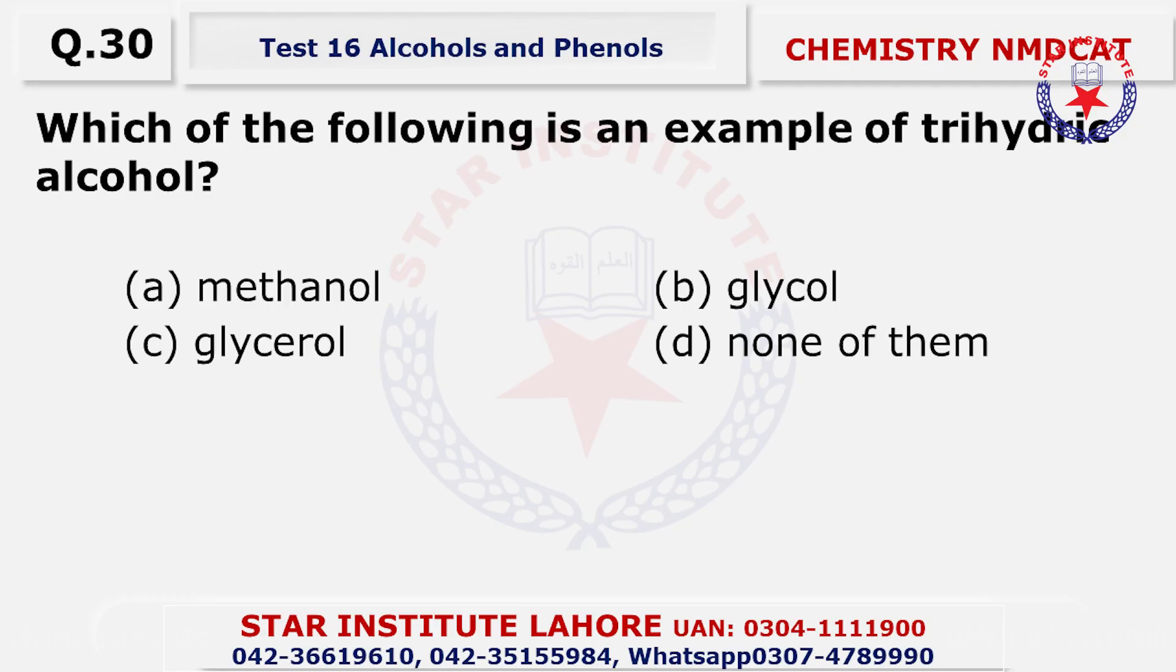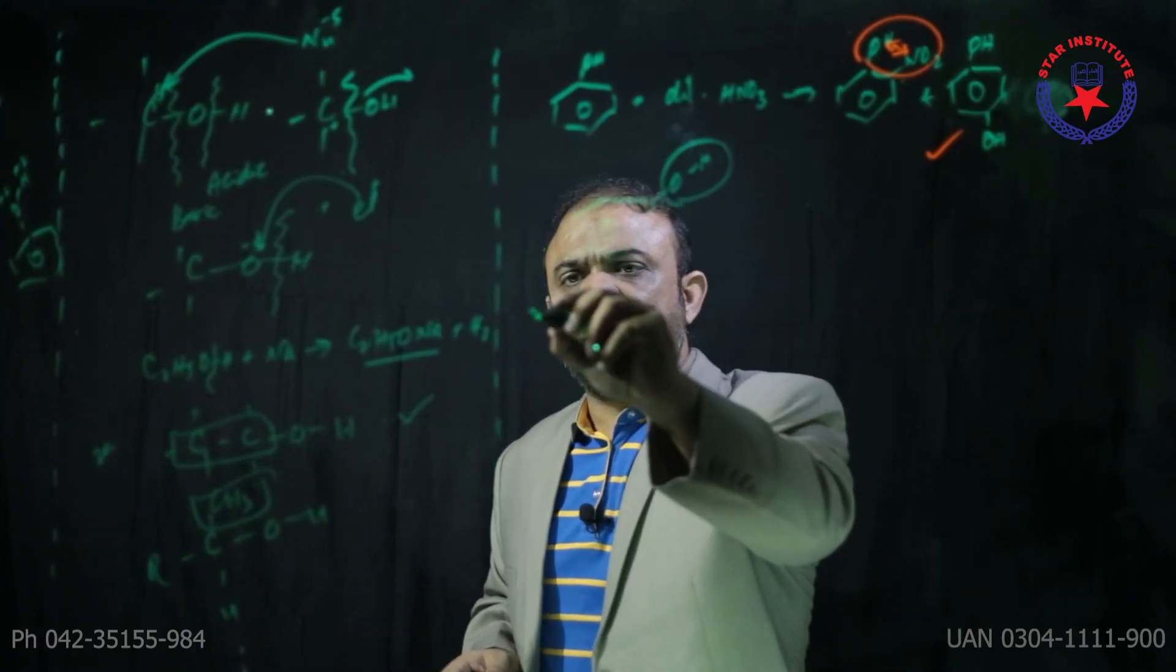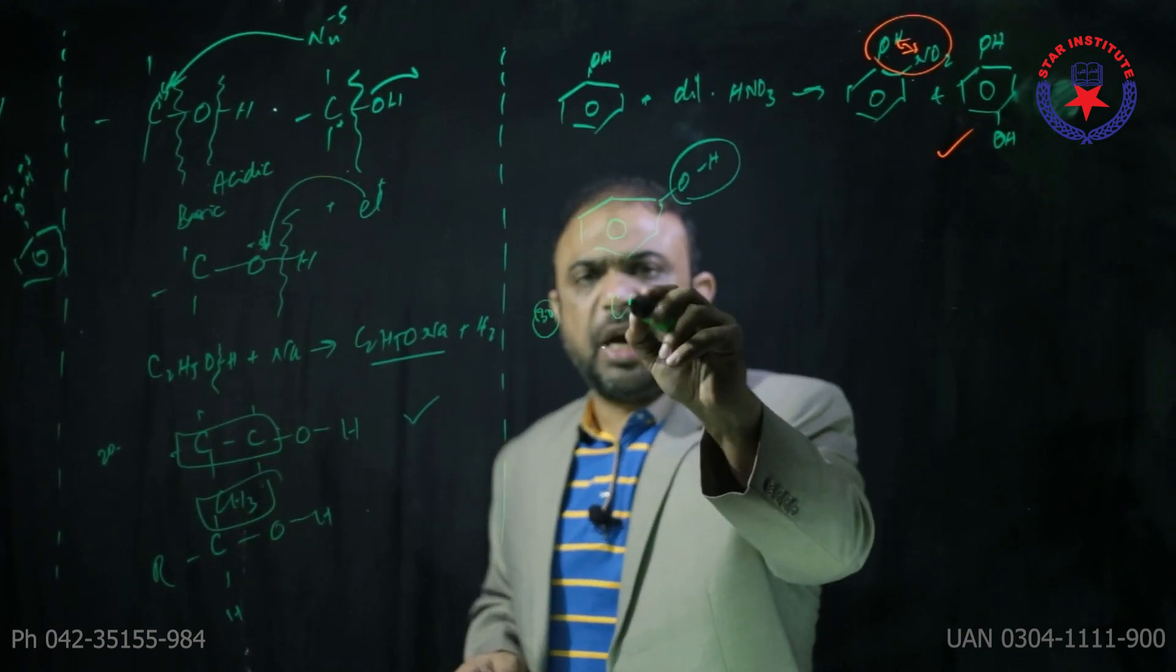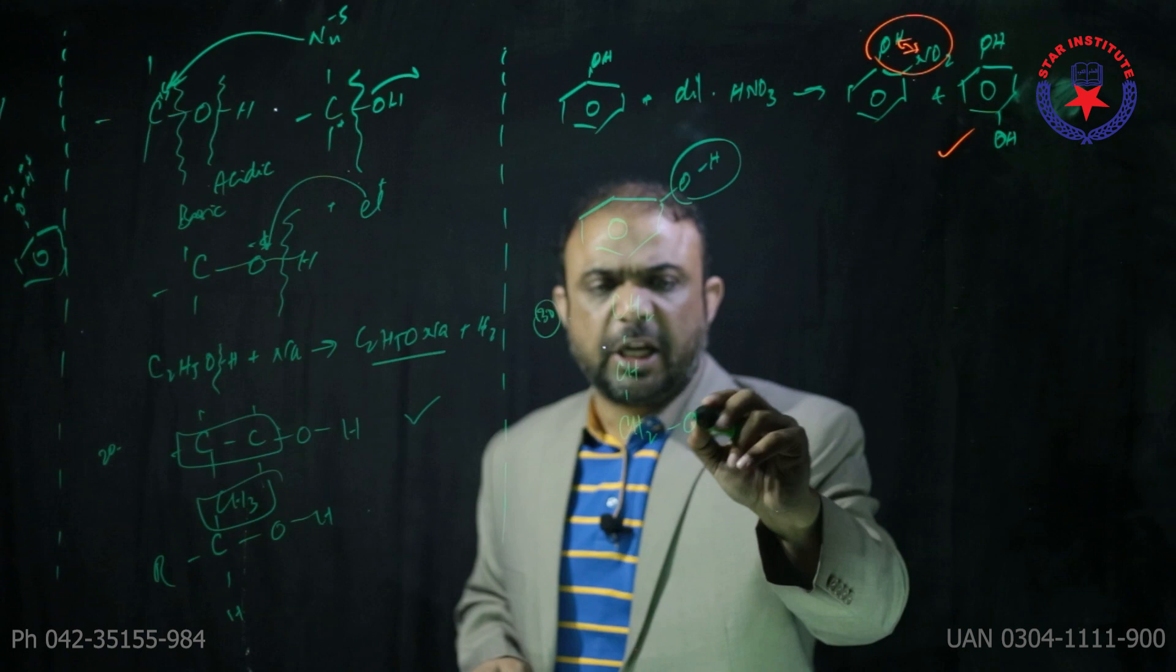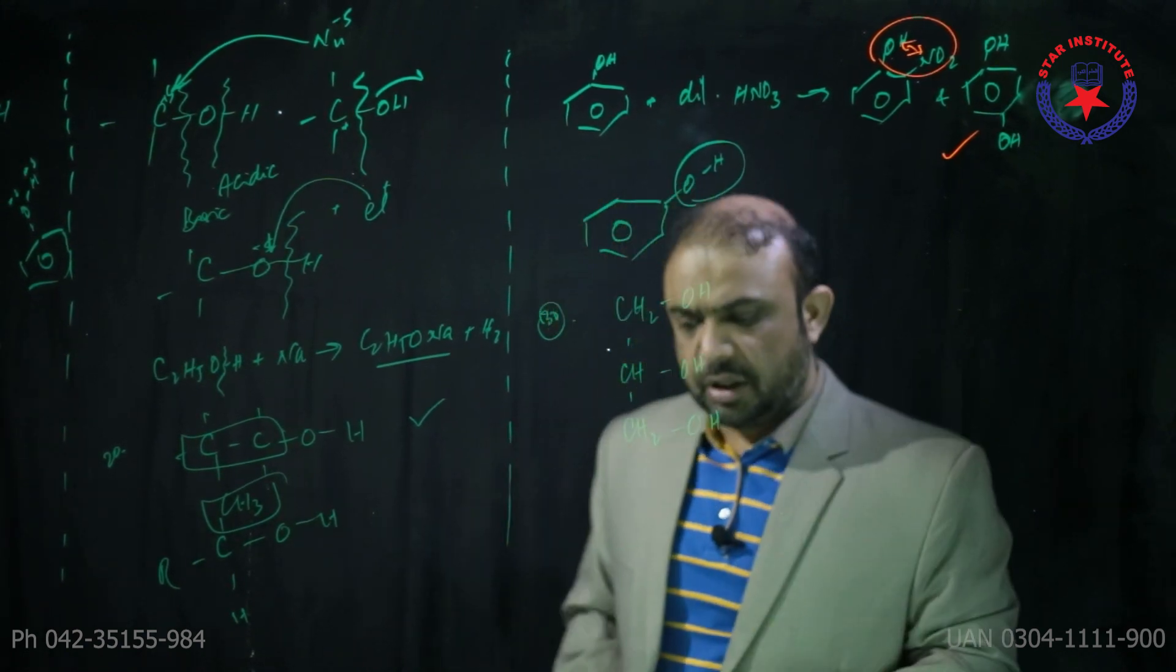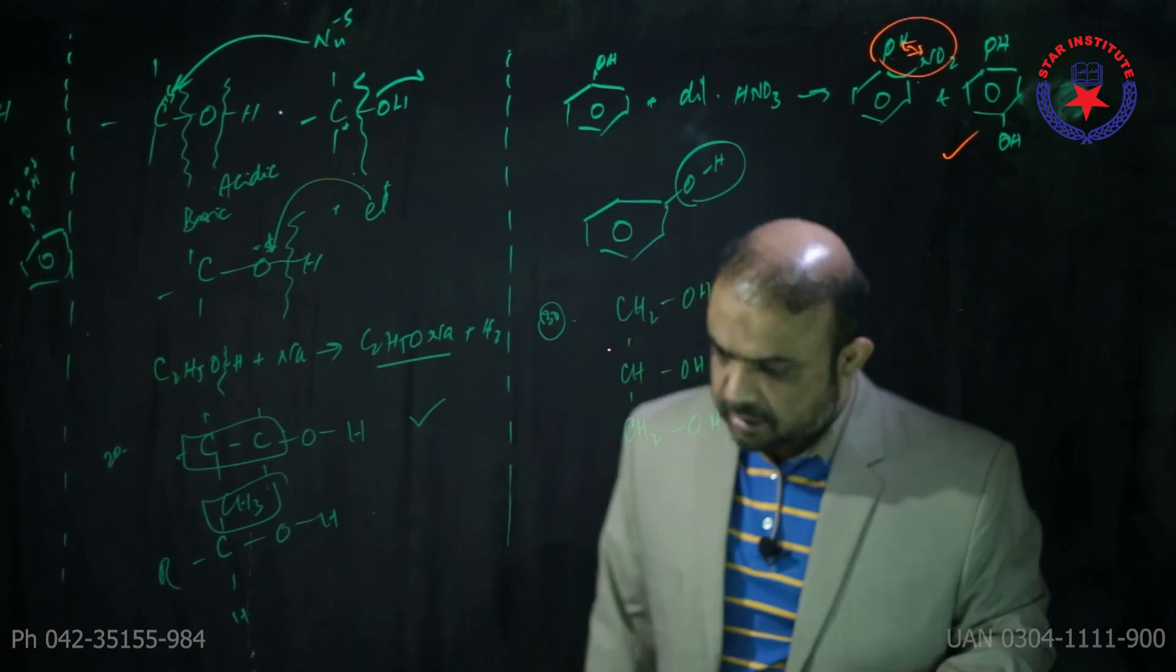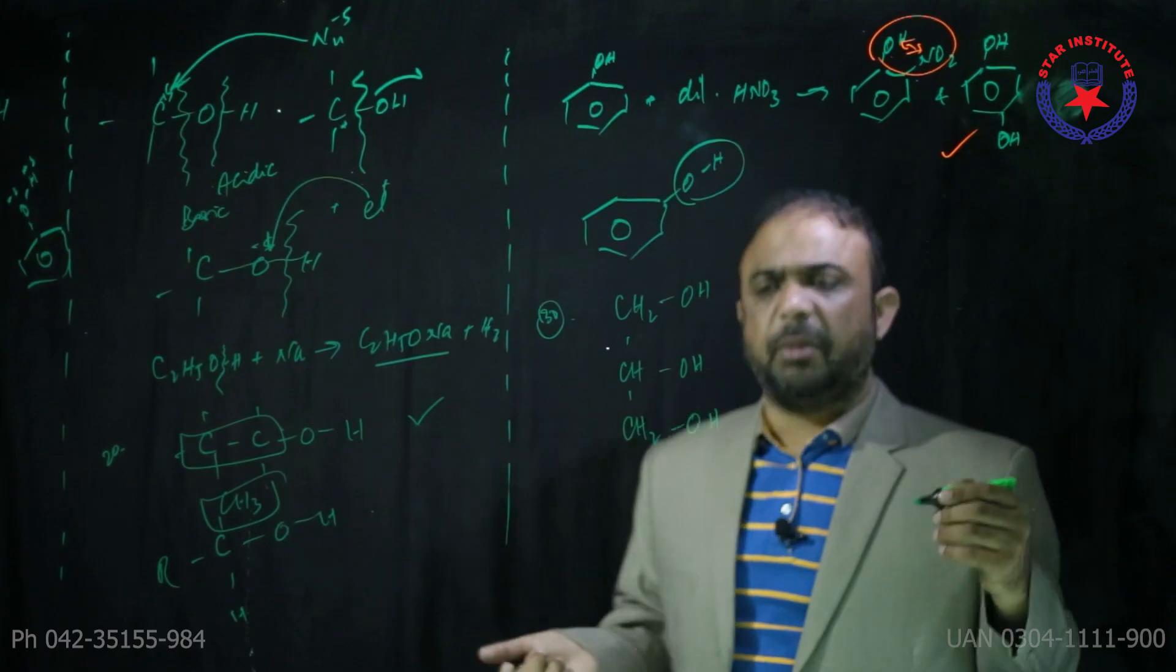Question twenty-nine: which of the following are considered derivatives of water? All of these - the first line of the book states these are all derivatives. Question thirty: which is an example of tri-hydric alcohol? Glycerol's formula - it's tri-hydric alcohol because it has three OH groups attached.